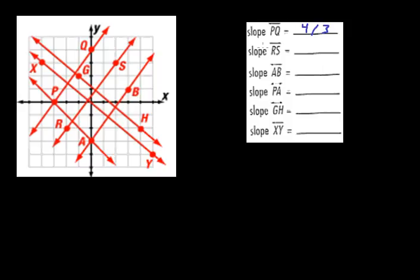And then we'll look at the next one, RS, line RS here. We just say, hey, well, this rise is 1, 2, 3, 4, and 5. 5 over, well, 1, 2, 3, 4. Well, 5 over 4.